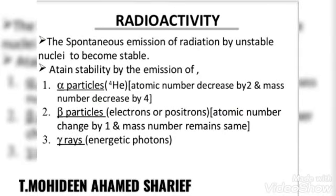Radioactivity is the spontaneous emission of radiation by unstable nuclei to become stable. To attain stability, they emit alpha particles, beta particles, and gamma rays. Alpha particles are nothing but helium nuclei — the atomic number decreases by 2 and the mass number decreases by 4.